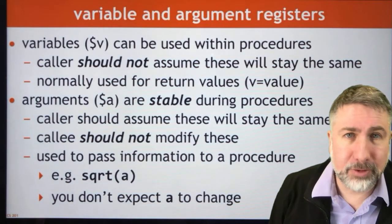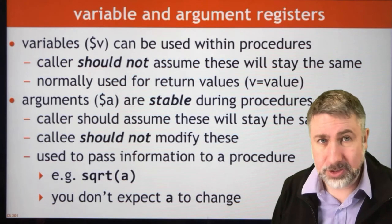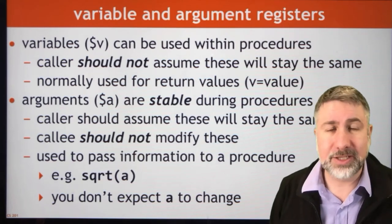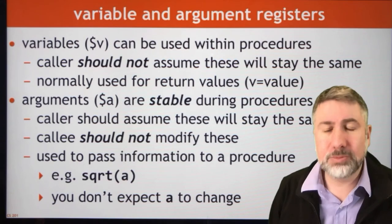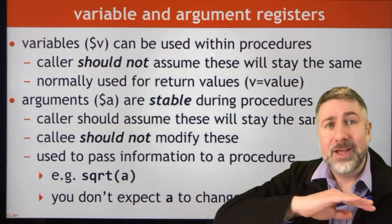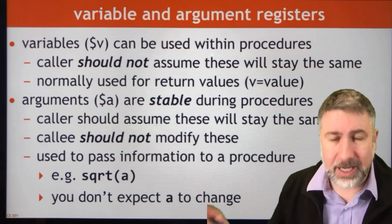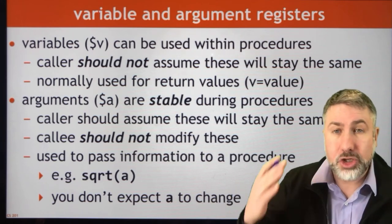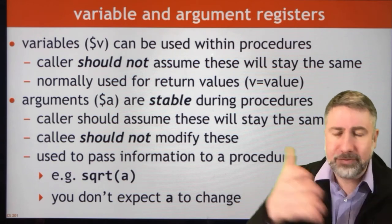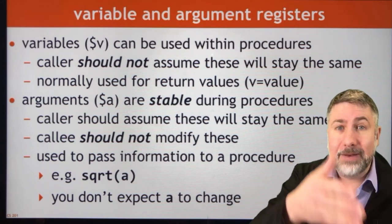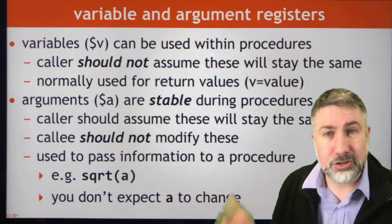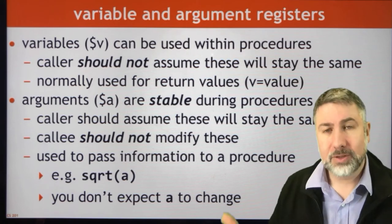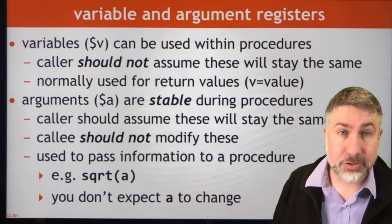Variable registers (V) can be used within procedures — the caller is not going to assume that they will stay the same. We're going to assume that they might change. So any time you call a procedure a V register is fair game; it could change within the course of that procedure. An A register should not change within the course of that procedure. You can put information in the A register and be confident that at the end of your procedure that information will not have changed. So A registers are stable and V registers are not.